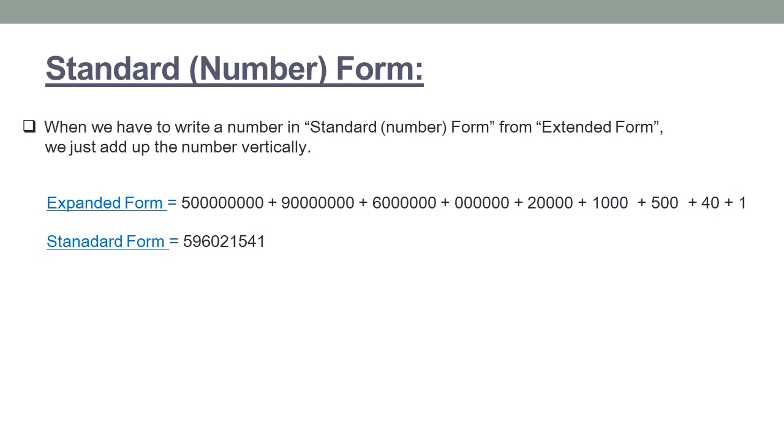Suppose we have a number 500 million plus 90 million plus 6 million plus 0 plus 20,000 plus 1,000 plus 500 plus 40 plus 10. We just add up all the numbers to get standard form.